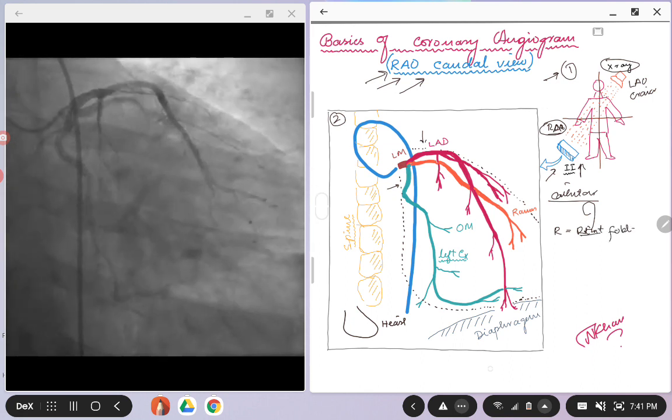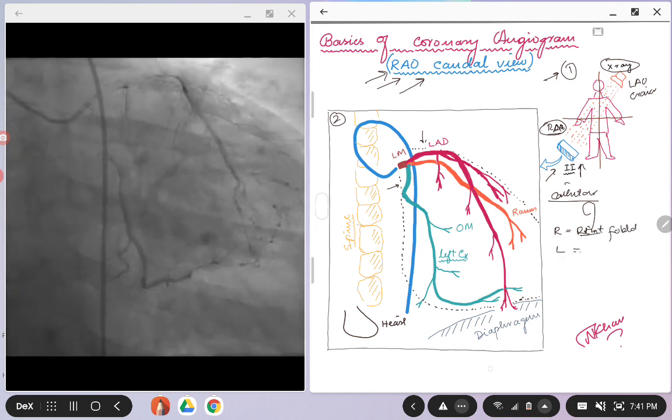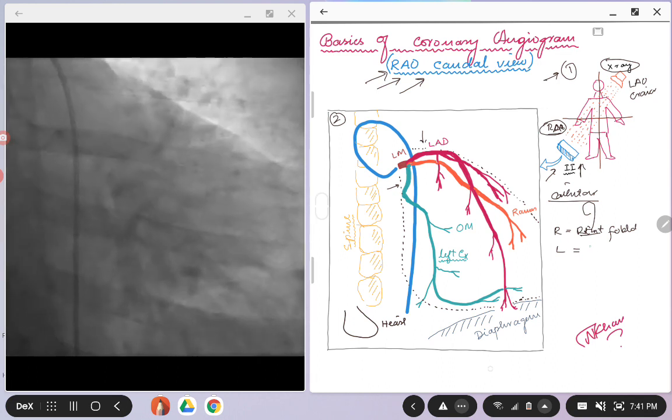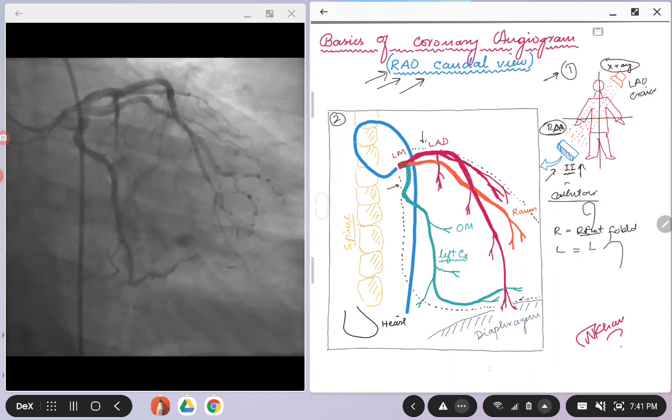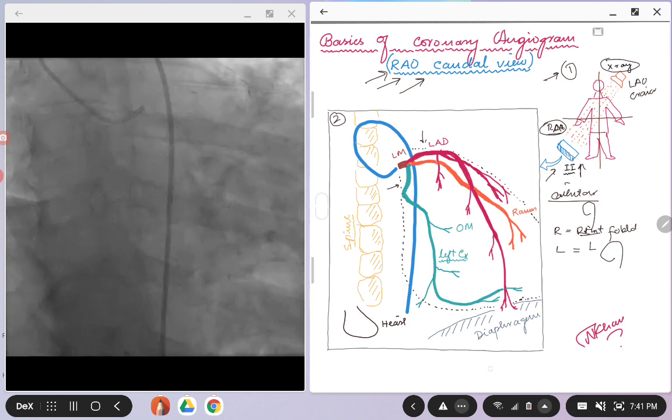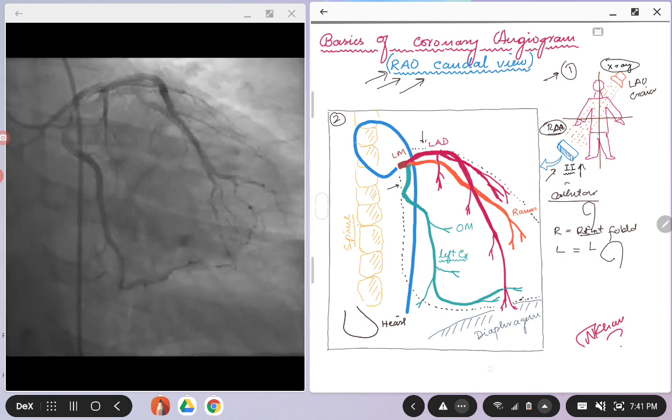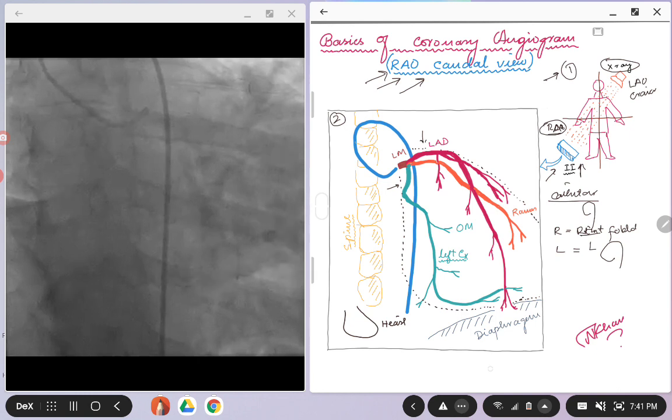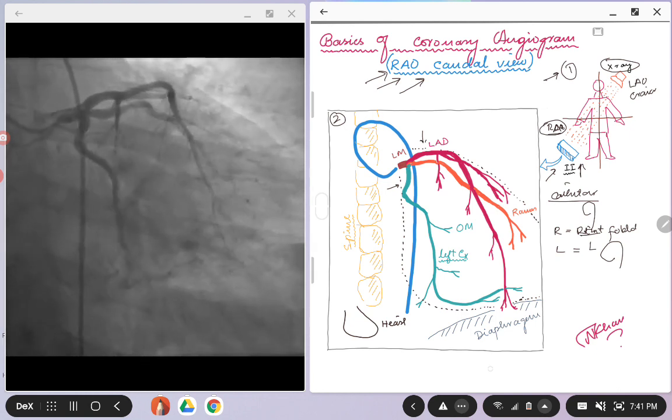As compared to the LAO views where the catheter will be like L or it will be open like this. So just quickly glancing this cine loop on the left side, you can tell by looking at the catheter that it is an RAO view.